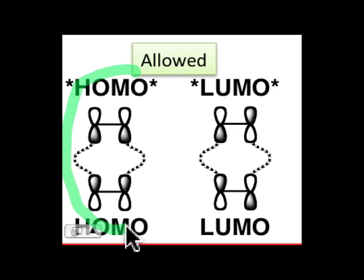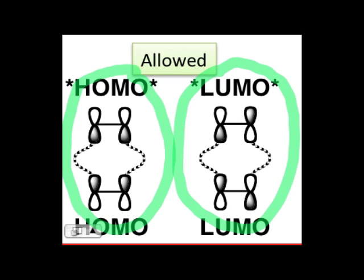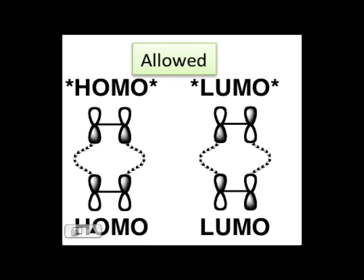the excited state molecule and HOMO on the ground state molecule. Another possible FMO interaction would be between LUMO star and LUMO. You can see that in either of these cases, the phases are matched for a suprafacial plus suprafacial interaction in the 2 plus 2 cycloaddition.